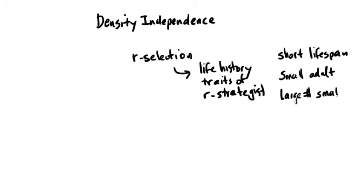This leads to a suite of life history traits that we associate with R-strategists: short lifespans, small adult body size, and large numbers of small offspring. But this presumes that the population sustains exponential growth through enough of its evolutionary history for R-selection to shape the species as R-strategists.